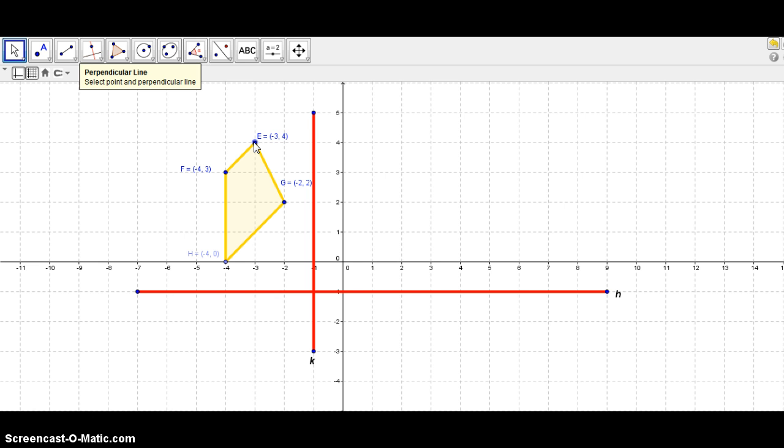Alright, so let's start with point E. Point E is two units away from line K, so therefore your reflection will be two units on the other side of line K, and so that will be here. And so we would like to label that one right away. So point E over line K, that will be E prime.